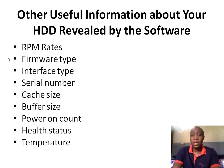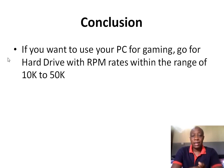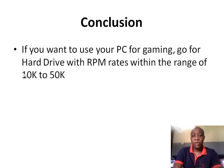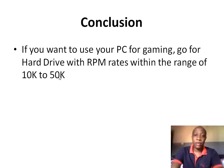Now, why is checking RPM actually useful? For example, if you want to buy a new PC or laptop, the higher the RPM the higher the performance. For people who prefer gaming on a laptop, it is advisable to go for one with a higher RPM rate — within the range of ten thousand to fifteen thousand RPM. The RPM I got from my own laptop is 5,400, which is quite low.